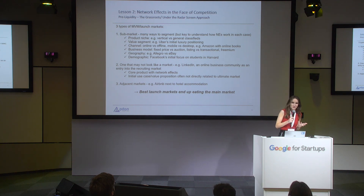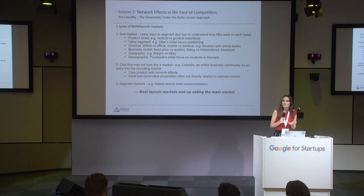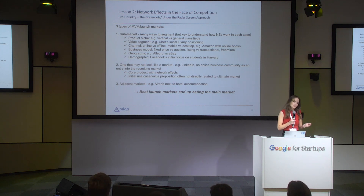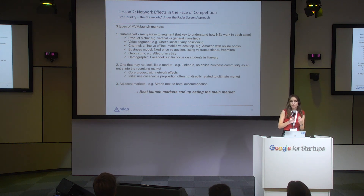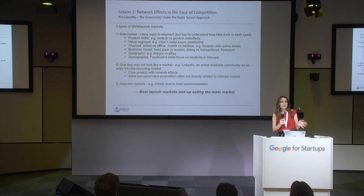The second type of launch market or MVM is a market that doesn't really look like a market to start with. A good example is LinkedIn — they started as an online community for professionals, and who would have thought they'd eat the recruitment market? The two key things here: make sure you still have network effects in your core product (the more profiles, the more engagement, the better the product), and make sure your initial use case is not directly related to the ultimate market — because if the big recruitment players had known LinkedIn's end game, they would have killed it on day one.